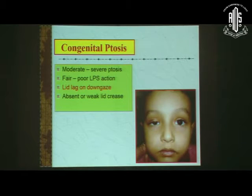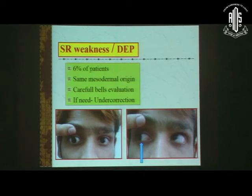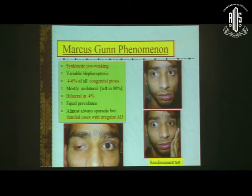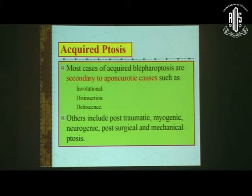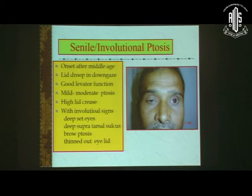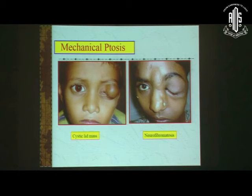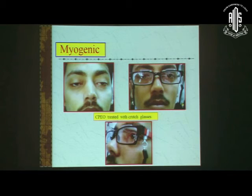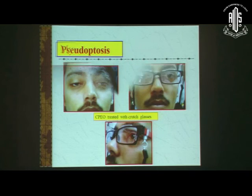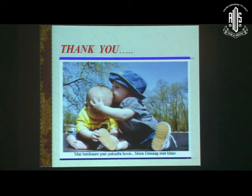Briefly on special forms: in congenital ptosis, look for lid lag on down gaze. In superior rectus weakness — since superior rectus and LPS have the same mesodermal origin — most patients need superior rectus ruling out. Blepharophimosis syndrome: look for family members and Marcus Gunn, seen bilaterally in 4% of cases. Aponeurotic ptosis includes involutional dehiscence or disinsertion, senile ptosis, blepharochalasis, and post-traumatic ptosis. Myogenic ptosis like chronic progressive external ophthalmoplegia is a contraindication for surgery — crutch glasses can be given. At the end of ptosis evaluation, we conclude what kind of surgery to proceed with.